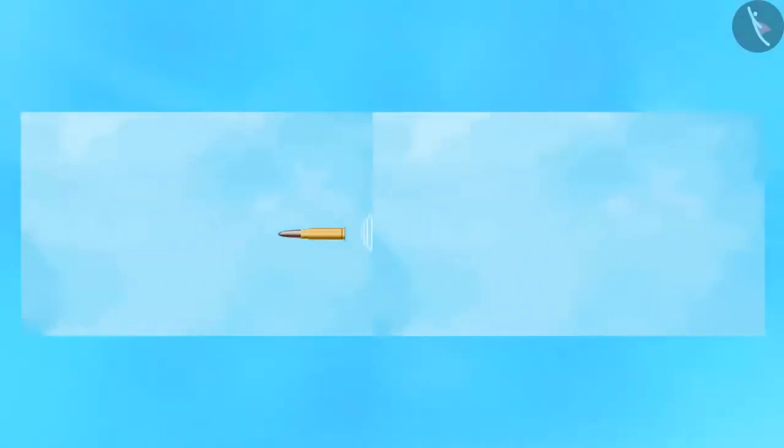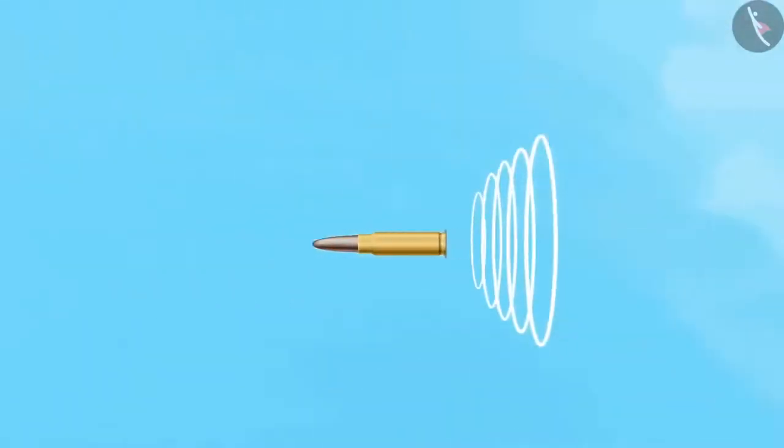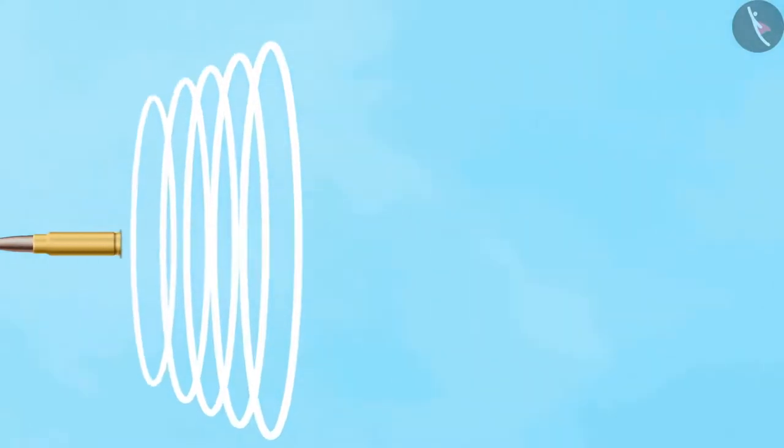Bullets and some jet aircrafts are some objects which travel at supersonic speed. When a sound producing source moves with a speed more than the speed of sound, it produces shockwaves in the air.